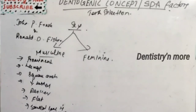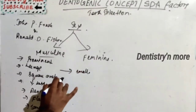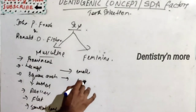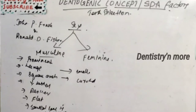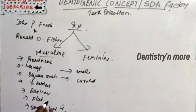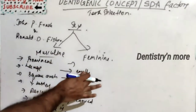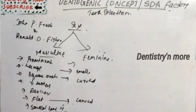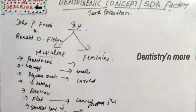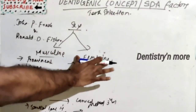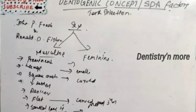For feminine features, the teeth will be smaller with curved contours and arches, curved labial surfaces, round incisal edges and corners, a curved smiling line, and a delicate appearance. Regarding the canines, only the mesial third will be seen — whereas in masculine features the cervical line is more visible and prominent.